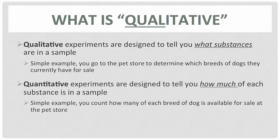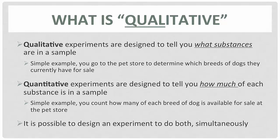However, a quantitative experiment is designed to tell you exactly how much of each type of substance is in a sample. So instead of going to the pet store and just finding out what kind of breeds, you might also find out the number of each breed as well. And oftentimes our equipment will be able to do both of these simultaneously, but sometimes not.